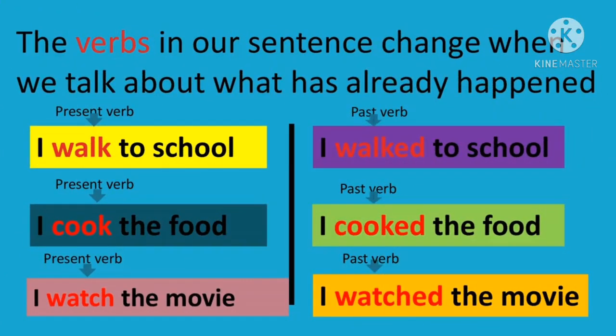The verbs in our sentence change when we talk about what has already happened. You can see on the right and left side the present verb and the past verb. 'I walk to school' becomes 'I walked to school' — add -ed. Another example: 'I cook the food' becomes 'I cooked the food.' The third example: 'I watch the movie' becomes 'I watched the movie' — add -ed.